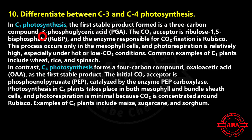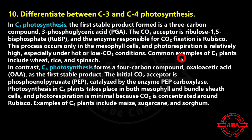Next: differentiate between C3 and C4 photosynthesis. In C3 photosynthesis, the first stable product formed is a 3-carbon compound, 3-phosphoglyceric acid. The carbon dioxide receptor is Ribulose 1,5-bisphosphate, and the enzyme responsible for carbon dioxide fixation is Rubisco. This process occurs only in mesophyll cells, and photorespiration is relatively high, especially under hot or low carbon dioxide conditions. Common examples of C3 plants include wheat, rice, and spinach.